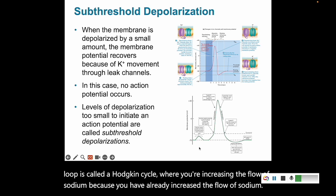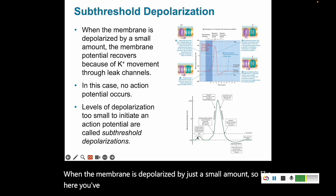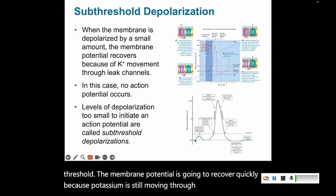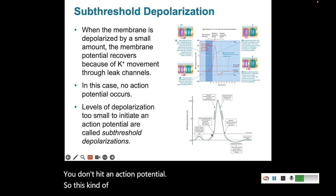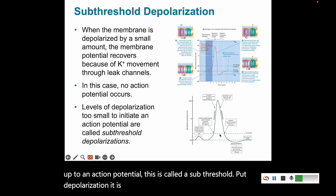When the membrane is depolarized by just a small amount — not yet hitting the threshold — the membrane potential recovers quickly because potassium is still moving through the leak channels and an action potential is not triggered. This is called a sub-threshold depolarization: it is below the threshold required to fully generate an action potential.